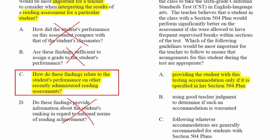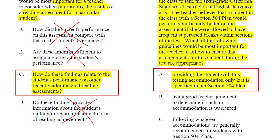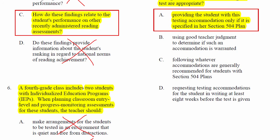Item 7 is about a 504 plan, typically dealing with behavior or health. A middle school teacher is preparing for the class to take the 6th grade California Standards Test in English language arts. The teacher believes a student with a 504 plan would perform better if allowed frequent supervised breaks. The correct answer is A: providing the student with this accommodation only if it's specified in her Section 504 plan. You can't just make up what you want — you've got to follow the rules.